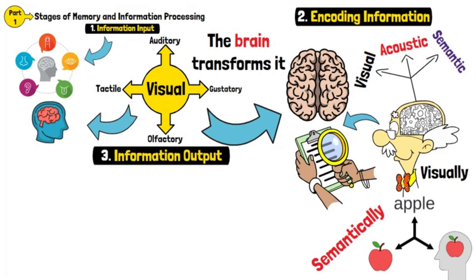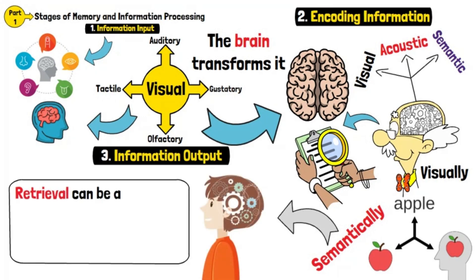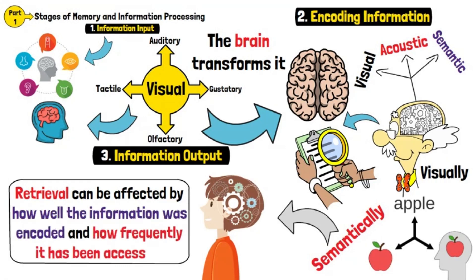Information Output: After the brain encodes and stores information, it can be retrieved and used when needed. Retrieval can be affected by how well the information was encoded and how frequently it has been accessed.